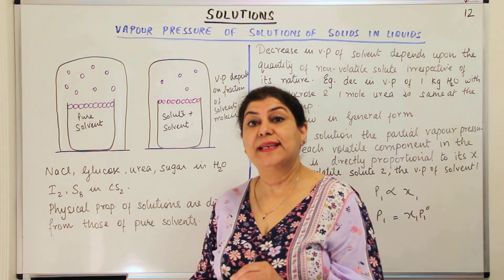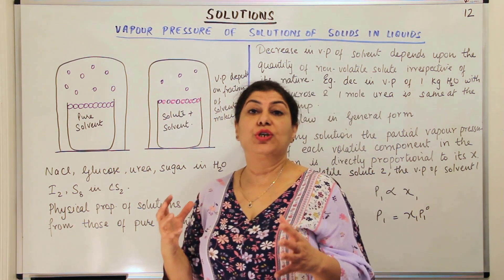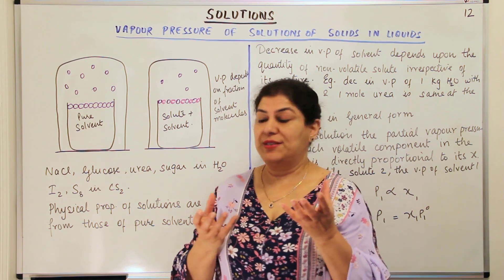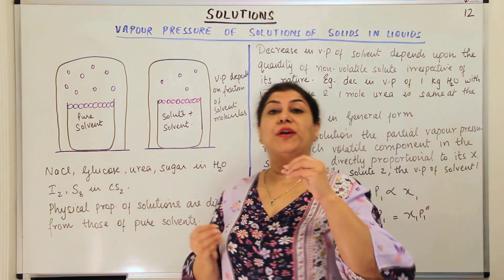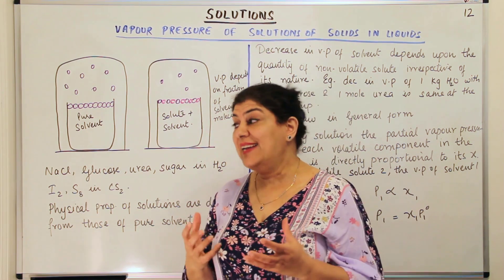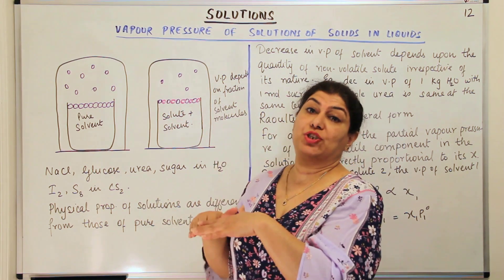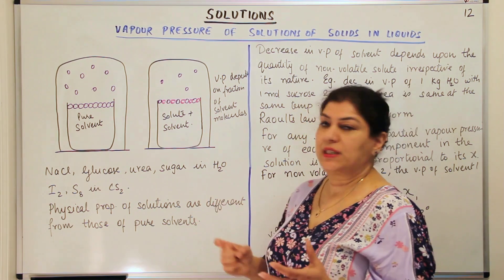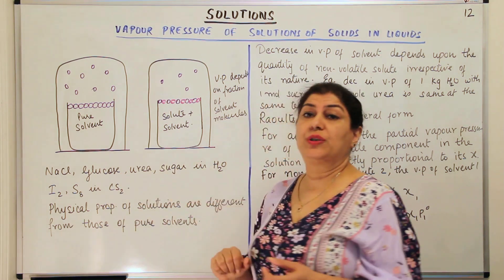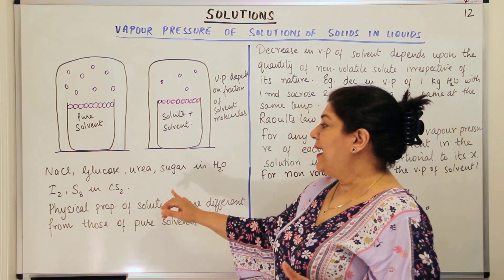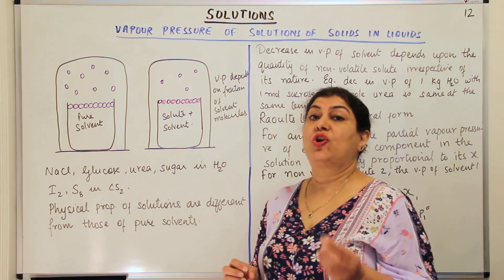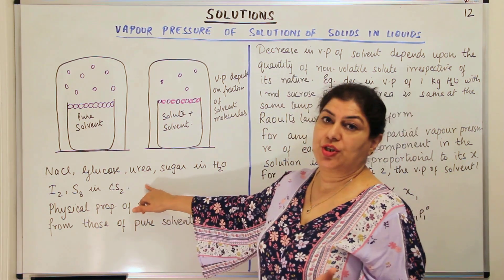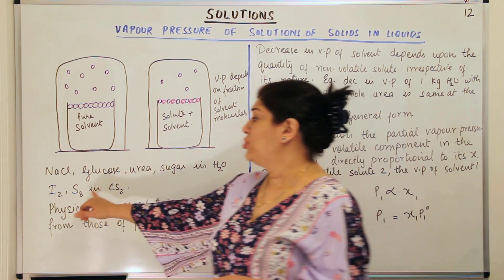As a result, the solvent molecules cannot escape at the same rate as they did in the case of pure solvent. The molecules of the non-volatile solute that occupy the surface block the volatile solvent molecules from entering the vapor phase, and therefore the vapor pressure of the solvent decreases on addition of the solute. This is known as the decrease in vapor pressure due to addition of a non-volatile solute. Examples include sodium chloride, glucose, urea, and sugar dissolved in water, as well as iodine and sulfur dissolved in carbon disulfide — all cases where the solvent is volatile but the solute is non-volatile.